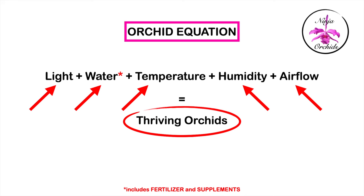And because it's that simple, it kind of makes sense. I call them variables for a reason — if one changes, then somewhere something else has to change as well. Maybe more of one, less of the other, a combination of two adjustments, etc. So let's tweak this perfect equation by just increasing the light levels, be that longer daylight hours or stronger light. Orchids will respond to higher light or longer light exposure by either growing or resting, depending on which one you're dealing with.